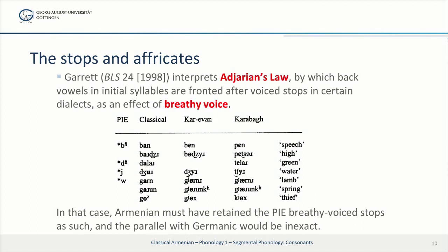In the dialect of Karabakh, for example, classical Armenian 'ban' corresponds to Karabakh 'pen'. And to look at one more example, the word for water, classical Armenian 'jur' corresponds to Karabakh with fronting of U to Y.